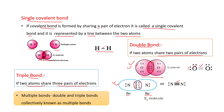In the next video we will discuss how to write Lewis structures. Multiple bonds: double and triple bonds are collectively known as multiple bonds.